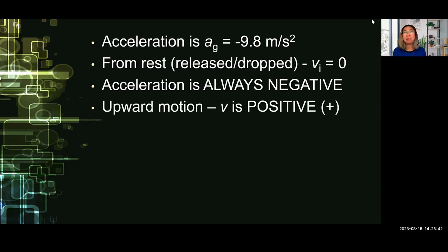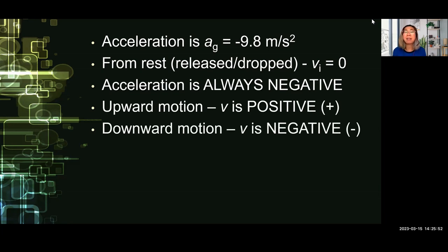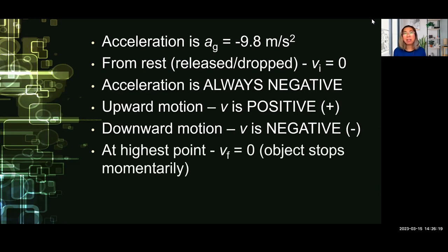Always remember that for the motion of objects, for an upward motion, the velocity is always considered to be positive. And if you have a downward motion, the velocity is always negative. But remember that the acceleration due to gravity, whether the object is moving up or moving down, is always equal to negative. Now at the highest point, your final velocity is equal to zero. When an object is thrown upwards, at the highest point or once it reaches its maximum height, the object will momentarily stop before it returns back to its original position or before it goes down.